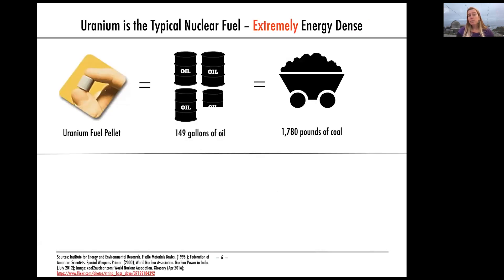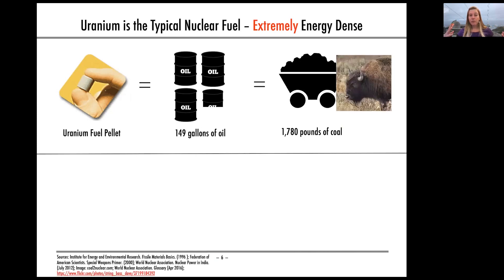The typical fuel we use for nuclear energy is uranium, and it is extremely energy dense. A nuclear fuel pellet — about the size of a pencil eraser — contains the same amount of energy as three and a half barrels of oil or 1,700 pounds of coal. If you can't picture 1,700 pounds of coal, that's about a bison's worth of coal, all packed into a tiny eraser-sized pellet.